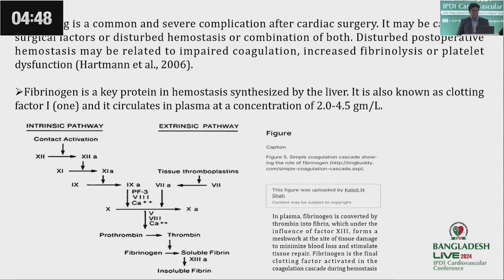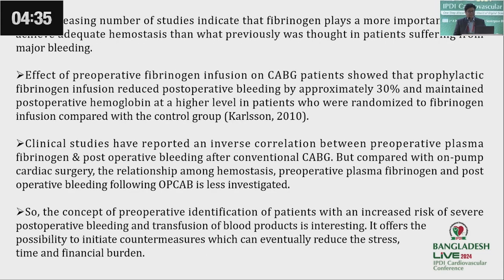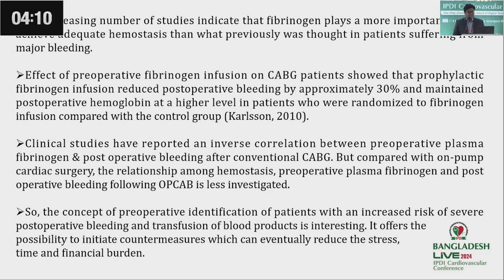Here comes the role of fibrinogen. Fibrinogen is a key protein in hemostasis synthesized by the liver, also known as clotting factor one, with a normal plasma level of 2 to 4.5 grams per liter. An increasing number of studies indicate that fibrinogen plays a more important role in achieving adequate hemostasis. Clinical studies have already reported an inverse correlation between preoperative plasma fibrinogen level and postoperative bleeding after conventional CABG. But in our country, most cases are done in an off-pump manner, so this relationship is less investigated in that arena.